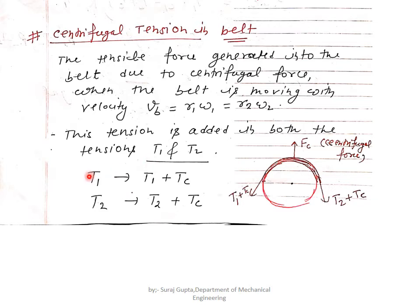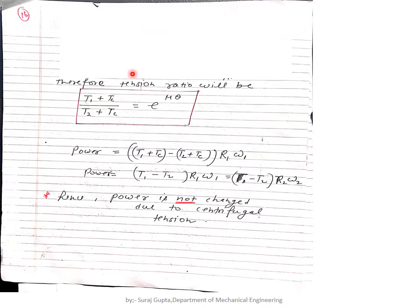Due to centrifugal force, T₁ becomes T₁ + Tc (called T₁_max) and T₂ becomes T₂ + Tc (called T₂_max). The tension ratio then becomes (T₁ + Tc)/(T₂ + Tc) = e^(μθ), as derived in the previous lecture. For power, (T₁ + Tc) − (T₂ + Tc) = T₁ − T₂, so Tc cancels out and the power formula remains P = (T₁ − T₂) × R × ω unchanged.